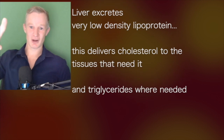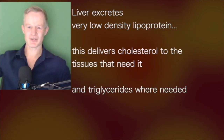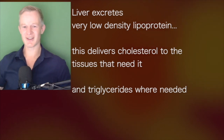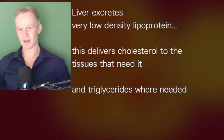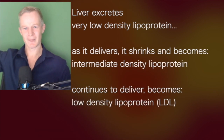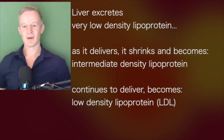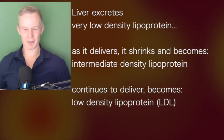This VLDL molecule gets released from the liver, and it deposits cholesterol to tissues around the body that need it. It gives triglycerides to where they need to be for energy or for storage. As it does so, it shrinks, and as it shrinks a little bit, it gets an arbitrarily different name: intermediate-density lipoprotein.